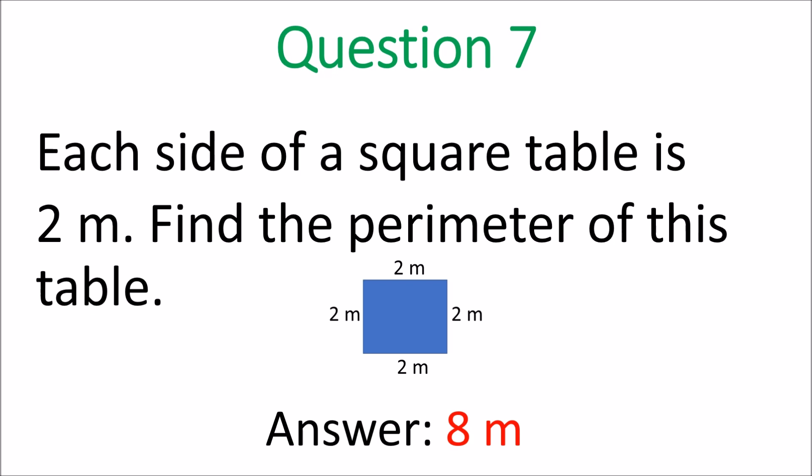Question seven: each side of a square table is 2 meters. Find the perimeter. Put in your sides: 2 meters, 2 meters, 2 meters, 2 meters. Perimeter means distance all around — add them: 2 plus 2 plus 2 plus 2 is 8 meters. Or multiply 2 by 4, since it's a square. The answer is 8 meters.